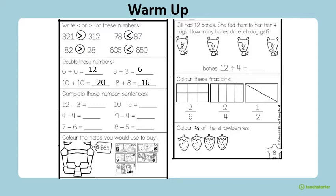Complete these number sentences. 12 take away 3 equals 9, 10 take away 5 equals 5, 4 take away 4 equals 0, 9 take away 4 equals 5, 7 take away 6 equals 1, and 8 take away 5 equals 3.